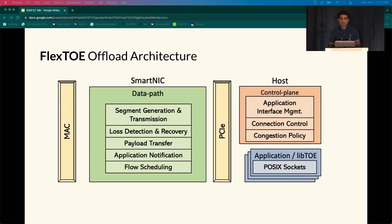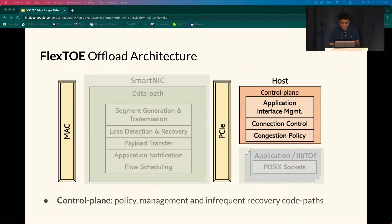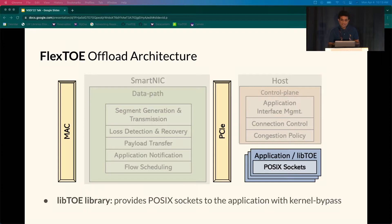Flexto splits TCP processing into three components: a SmartNIC-offloaded data path, a control plane, and an application library. The SmartNIC data path handles common-case per-packet transport logic like TCP segmentation, loss detection, and payload transfer. The control plane asynchronously handles policy and management mechanisms that run infrequently — including connection setup and teardown, application interface management, and congestion control policy. The application library, Lipto, is dynamically linked to unmodified applications and interposes on POSIX socket API calls, communicating directly with the SmartNIC data path via kernel bypass.